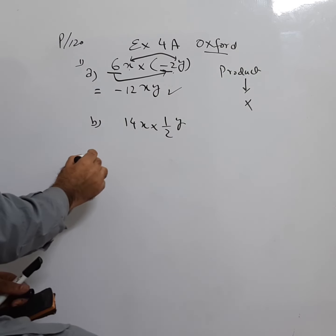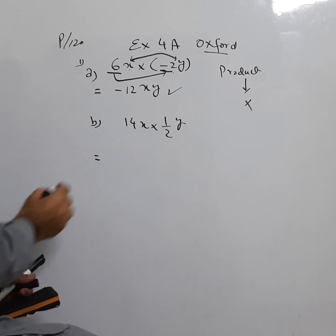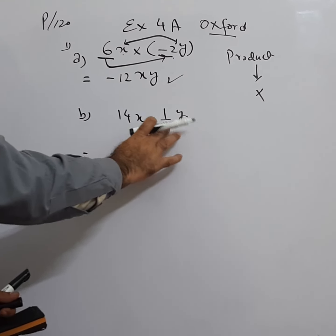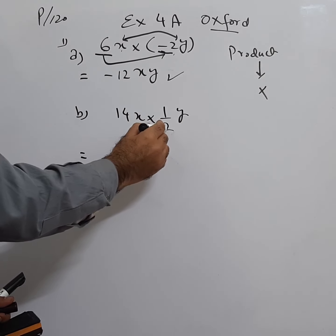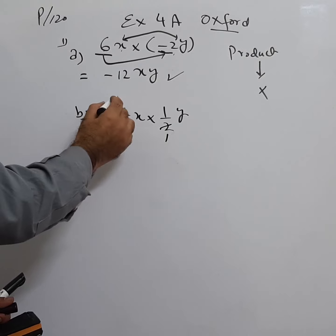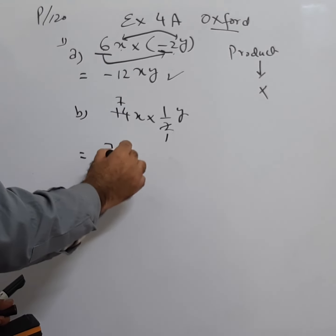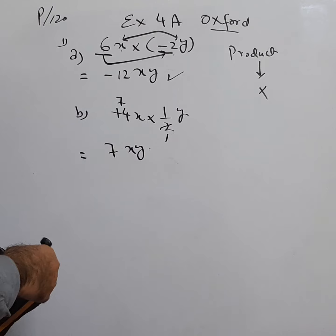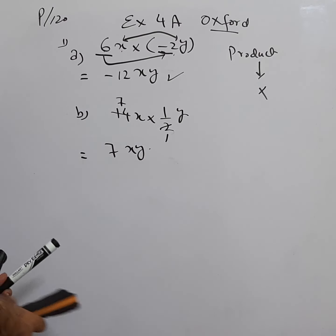Then here we come. 2 is down, it has been divided, so we divide it. 14 divided by 2 is 7, becomes 7x divided by y. So this is the answer of part b.